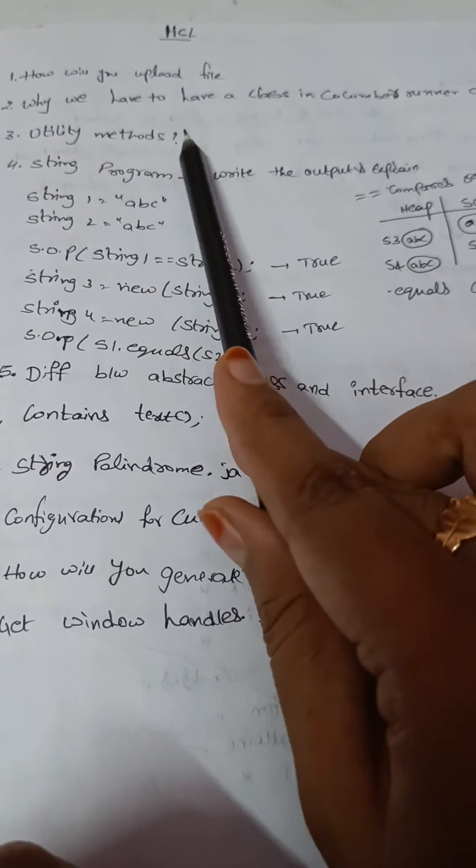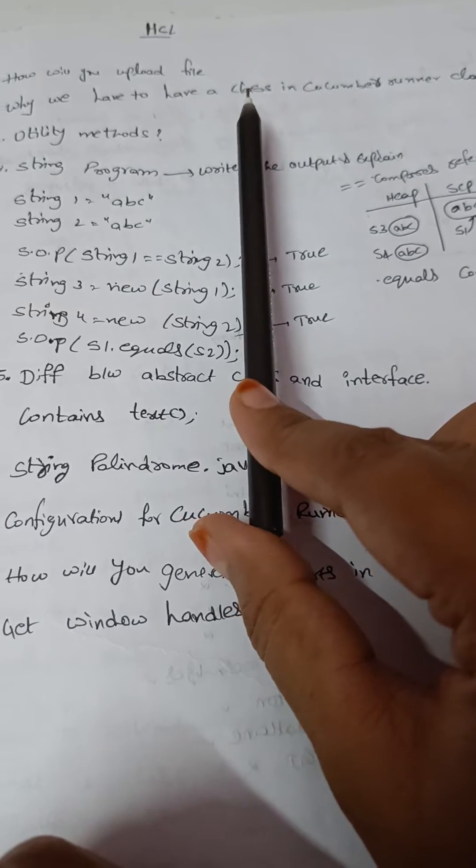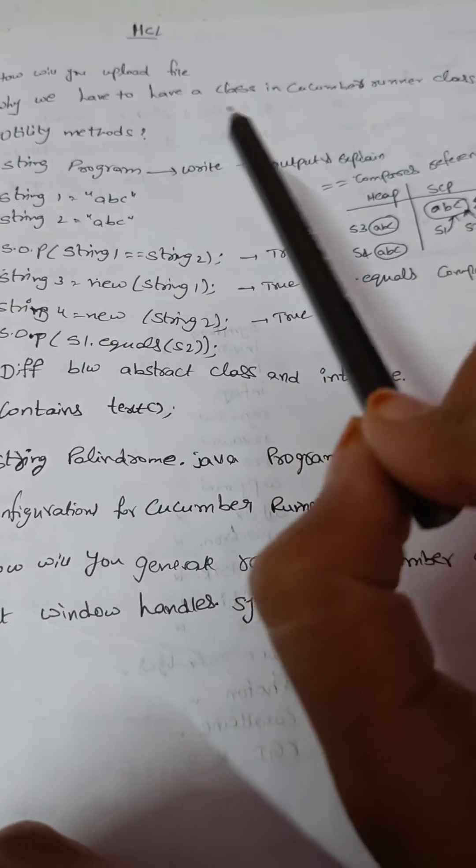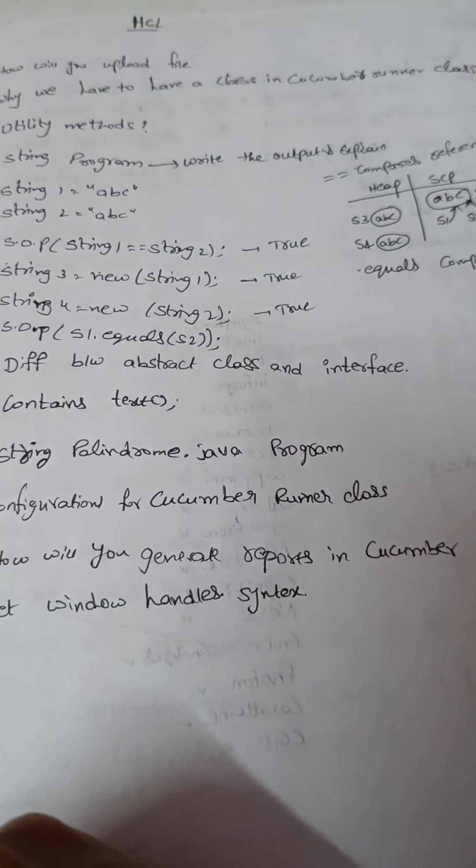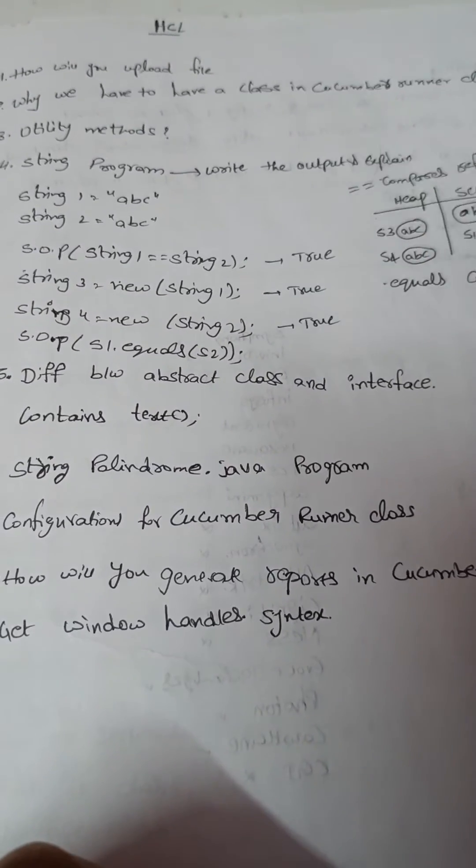And second question is why we have a class in Cucumber runner class? So I have used Cucumber framework so I came across this question like how I will run the Cucumber runner class and why I will be having a blank class in my Cucumber runner file.